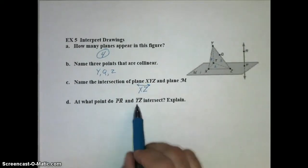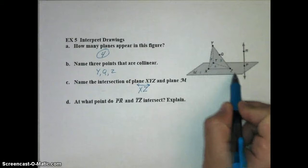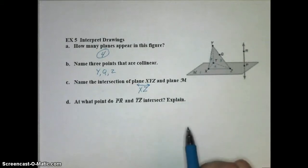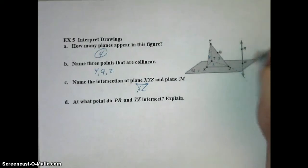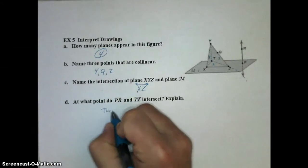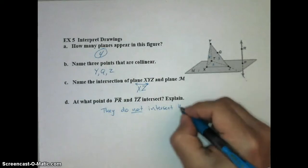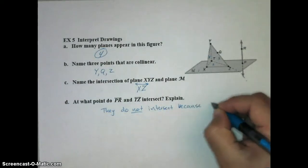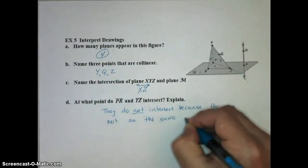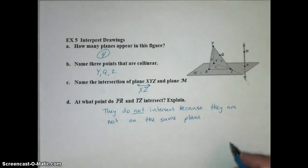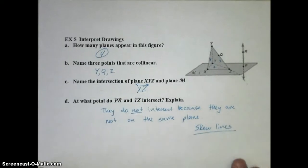And lastly, at what point do PR and TZ intersect? Those are two lines, so they intersect at a point. PR and TZ, they don't appear to intersect at all. If I were to even continue this, this is on one plane, this is not on the same plane. So these do not intersect because they are not on the same plane. And when two lines are not on the same plane and not parallel, we say that they are skew lines. A little bit of free vocabulary for you.